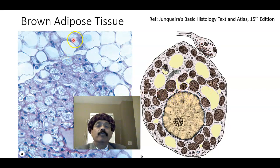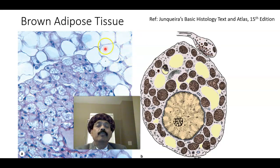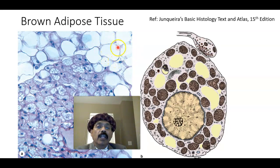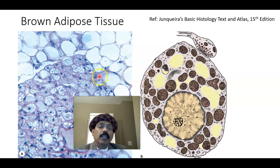White adipose tissue is the adipose tissue of the adult, forming around 20% of male body weight and 25% of female body weight. The number of organelles is less in white adipose tissue and more in brown adipose tissue. You should remember that in extreme conditions, some white adipose tissue may be converted into brown adipose tissue.